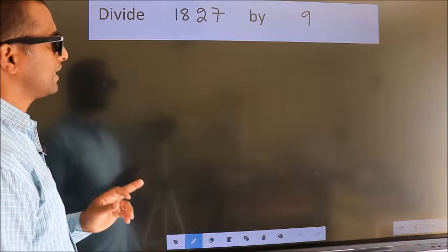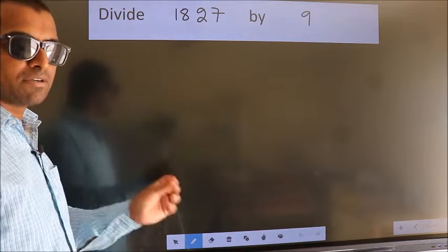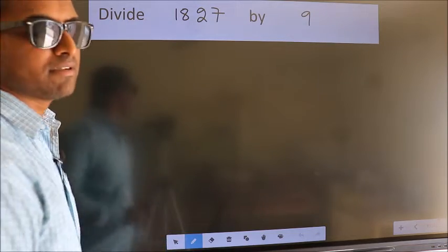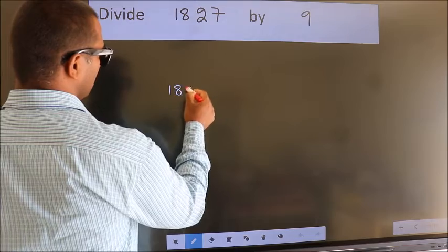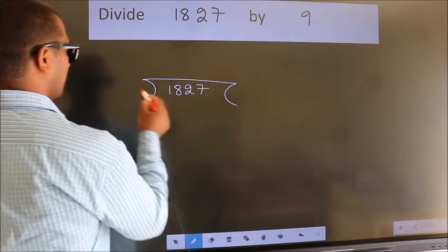Divide 1827 by 9. To do this division, we should frame it in this way: 1827 here, 9 here.